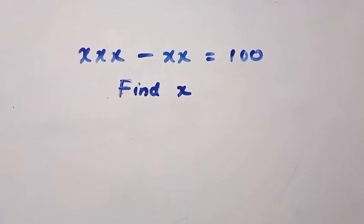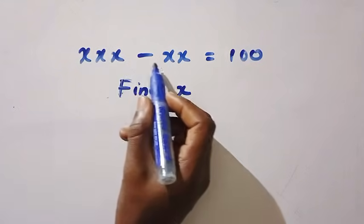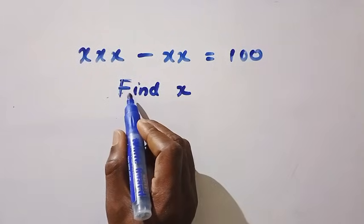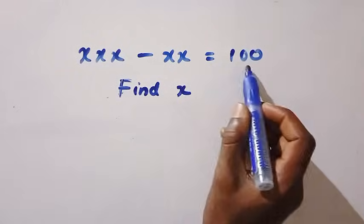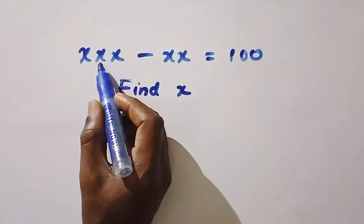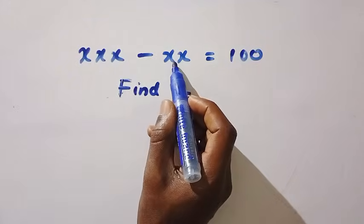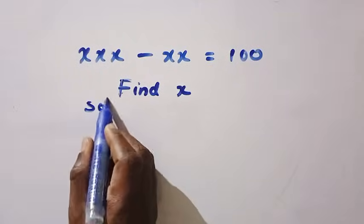Good day viewers, you are welcome. Today we solve a nice algebra equation: x times x times x minus x times x equals 100. We have to find x that makes all these equal 100. This is multiplication: x multiplied by x multiplied by x, minus x multiplied by x, equals 100.